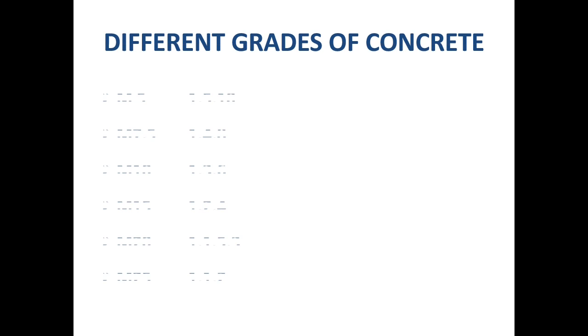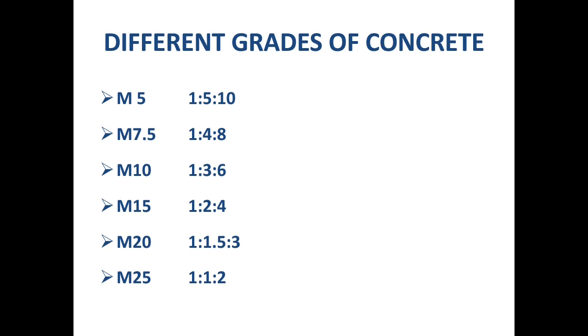The grades used in practice are M5, M7.5, M10, M15, M20, and M25. M5 grade of concrete has a ratio of 1:5:10. Similarly, M7.5 means 1:4:8, and M10 means 1:3:6, and so on for M15, M20, and M25. We will now see how to calculate the volume of cement, fine aggregate, and coarse aggregate for these different grades.